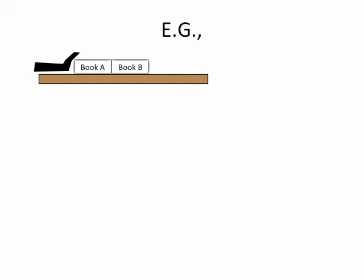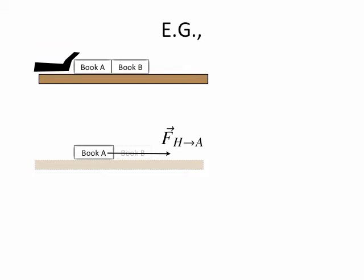Let's look at the two books we talked about in class — book A and book B — and draw a free body diagram for each. First, let's focus on book A. Book A is going to be a bold picture, and book B and the floor are going to be dotted or grayed out. Then let's identify the forces: the force of the hand pushing on book A, the force of book B pushing back on book A, the table pushing up on book A, and the earth pulling down on book A. So there are four forces acting on book A, each with a different and well-defined source, and all acting on book A.